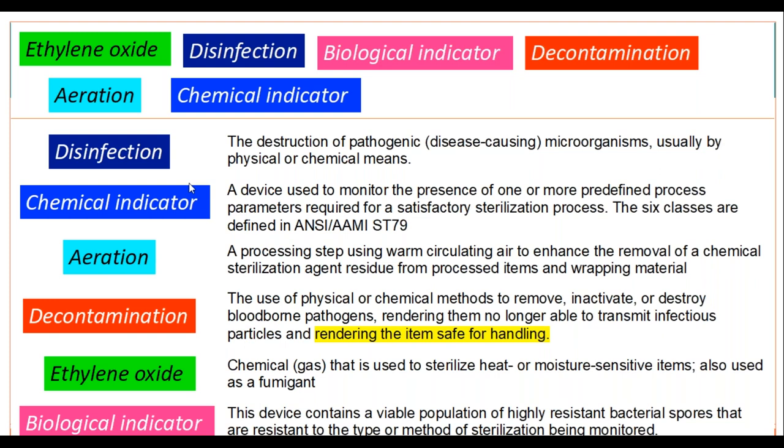Next, we have a device used to monitor the presence of one or more predefined process parameters required for a satisfactory sterilization process. There are six classes of chemical indicators defined in the ANSI/AAMI ST79. One key thing to remember: the word 'process parameters.' Chemical indicators look at parameters like temperature and humidity — don't confuse them with biological indicators.